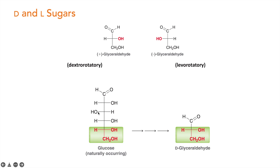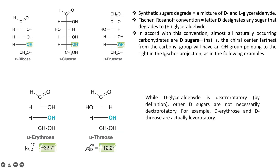In nature, only positive glyceraldehyde is present. So whatever natural sugars are present, when they are degraded, they give D-glyceraldehyde. For example, naturally occurring glucose, when you remove carbon from it one by one, gives D-glyceraldehyde, which rotates plane-polarized light clockwise. So it is easy to represent this glucose as D-glucose.